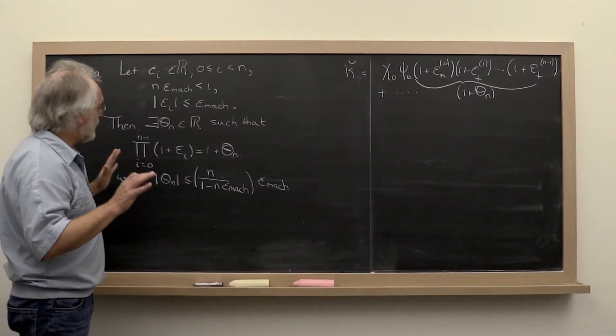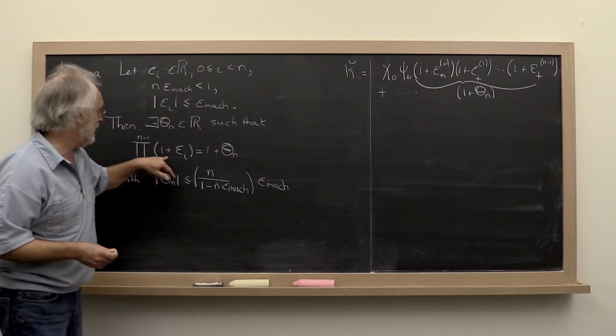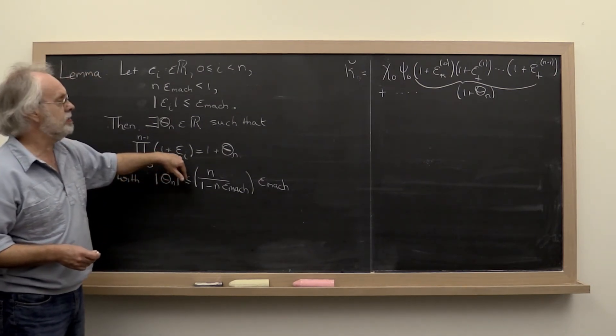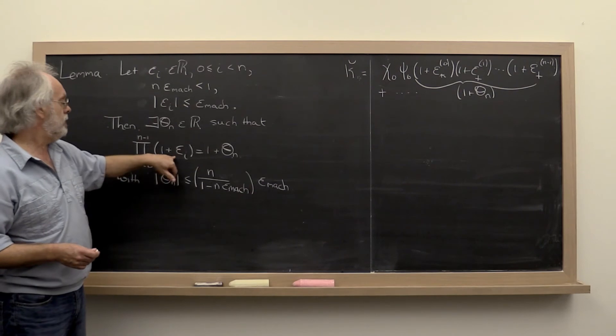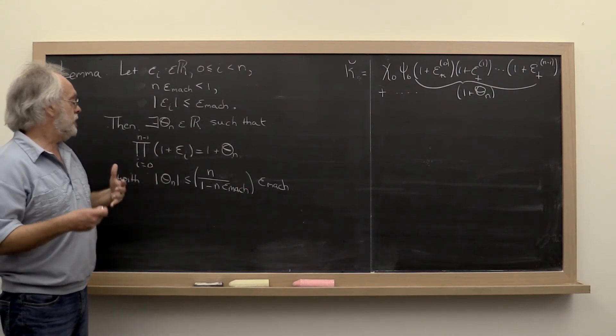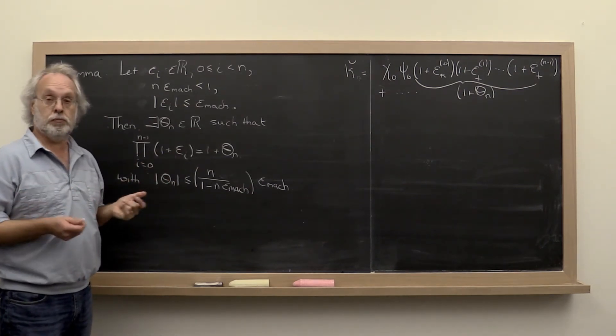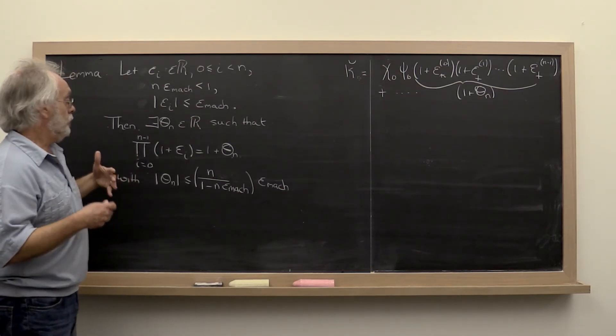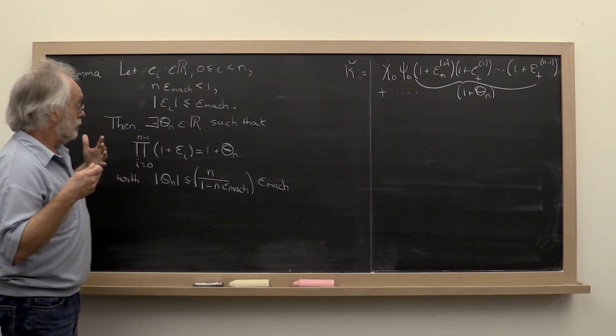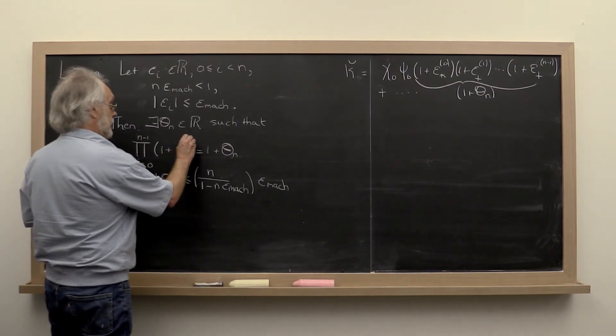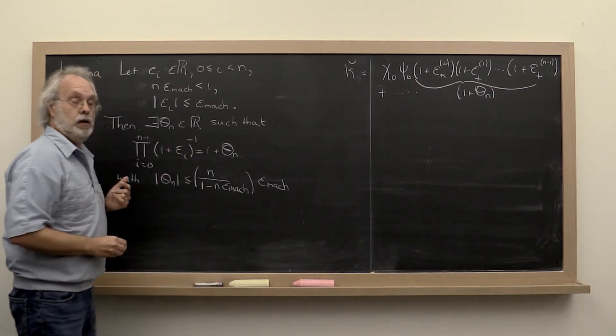Now you can actually generalize this slightly. These 1 plus epsilon factors come in when you use the standard computational model. If you use the alternative computational model, then you would get a minus 1 here.